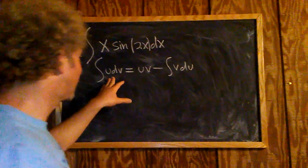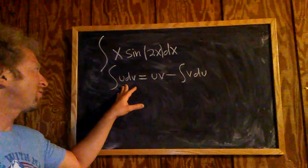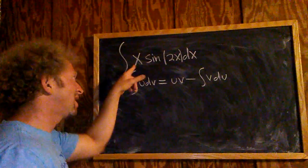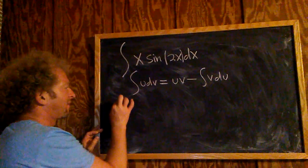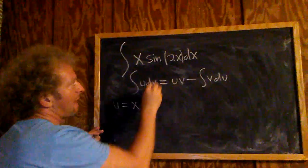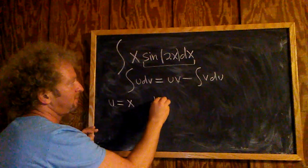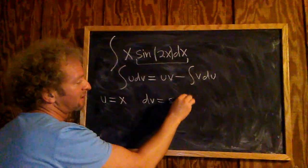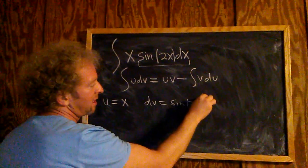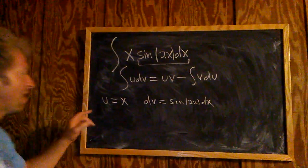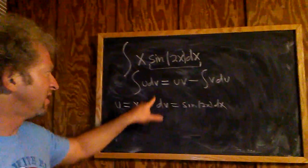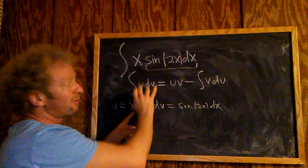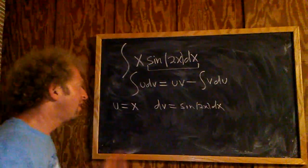So here, when you're using this formula, you usually want something that after repeated differentiation will be zero. In this case, U is going to be x, and then dV will be this piece here. So dV is everything left over, so it would be sine 2x dx. And now what you have is the integral of U dV. So you have x times sine 2x dx, so it fits the formula. This whole piece here is U dV.